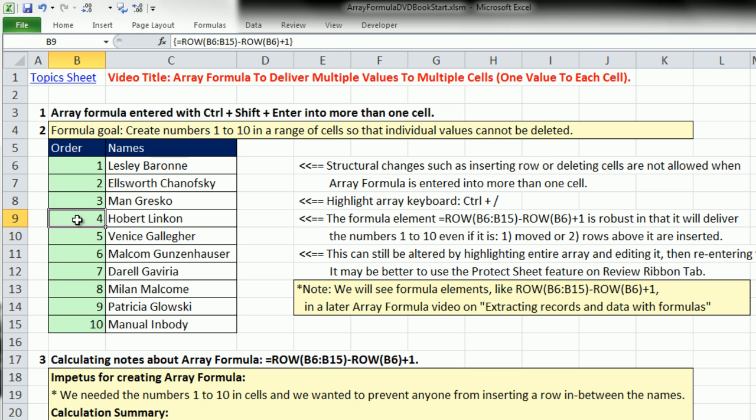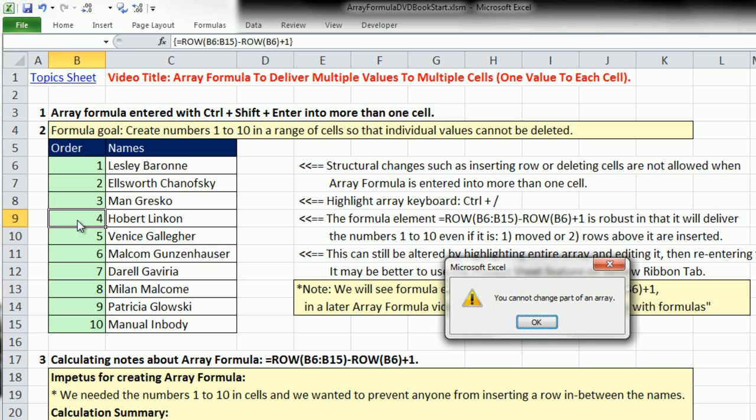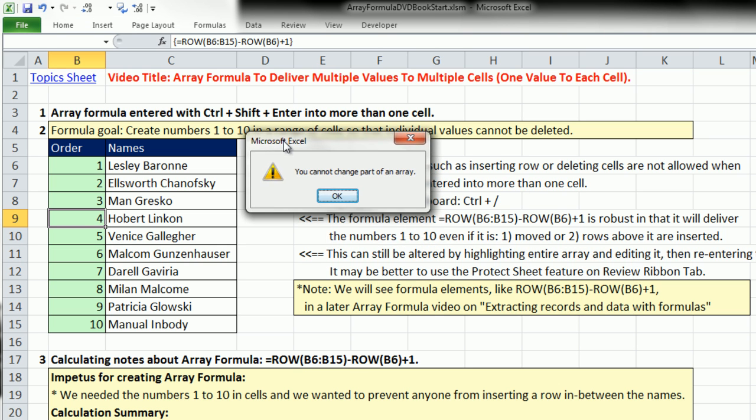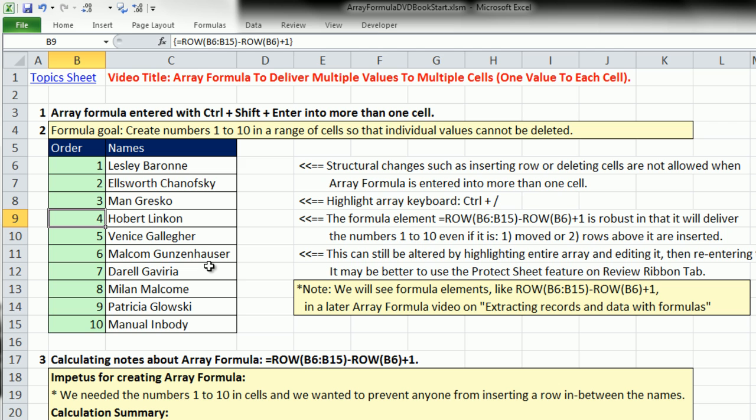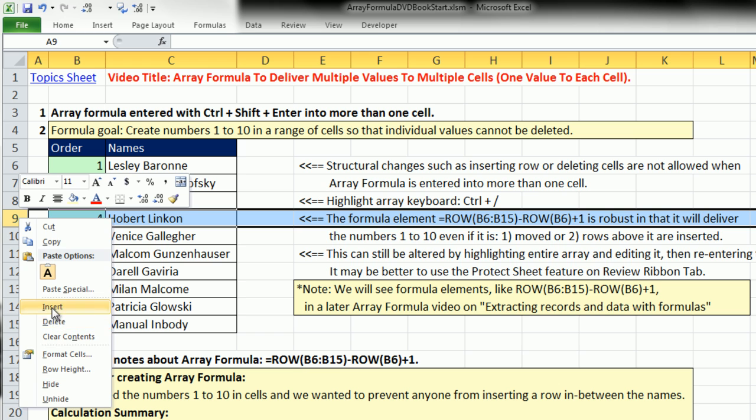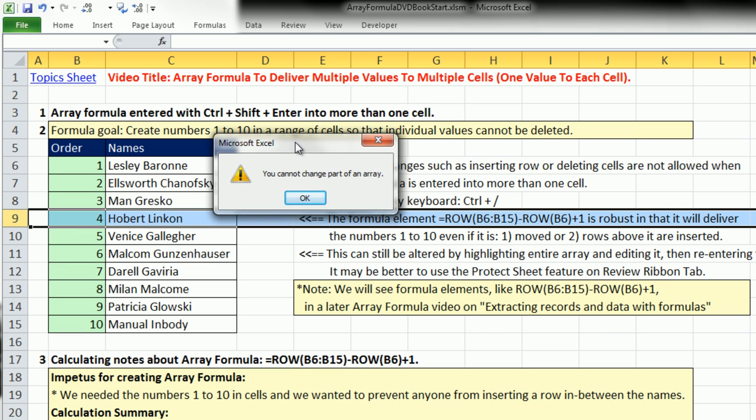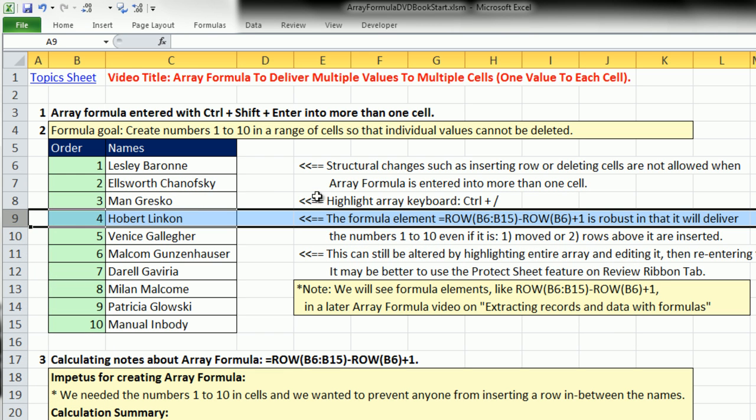Now, if I try to delete this with the Delete key, it tells me it cannot do it, because it's part of an array. If I use my Control-Forward-Slash, it highlights the current array. If I right-click Insert, it says, no, sorry pal, can't do that. So, that's one way to get the numbers 1 to 10 and not have anyone mess with them.